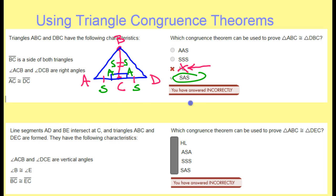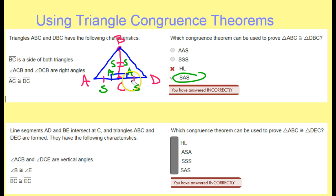That's why it's side, angle, side. Whoever had done this quiz before had picked hypotenuse leg, but it can't be hypotenuse leg because the hypotenuse is BD and AB, and we are not told anything about the hypotenuses.